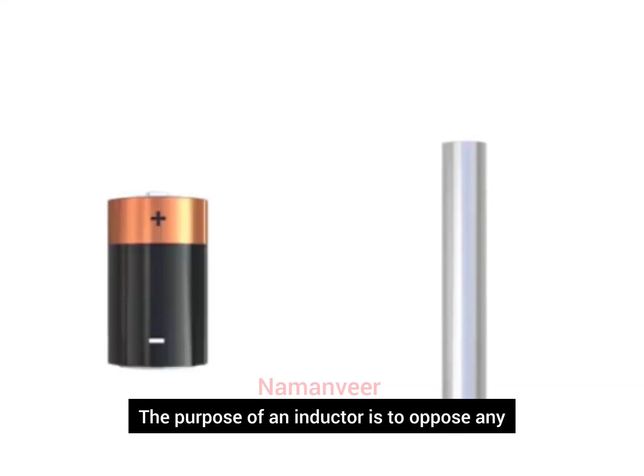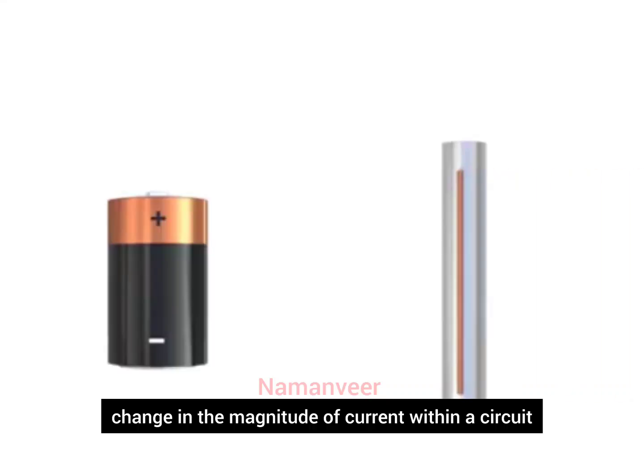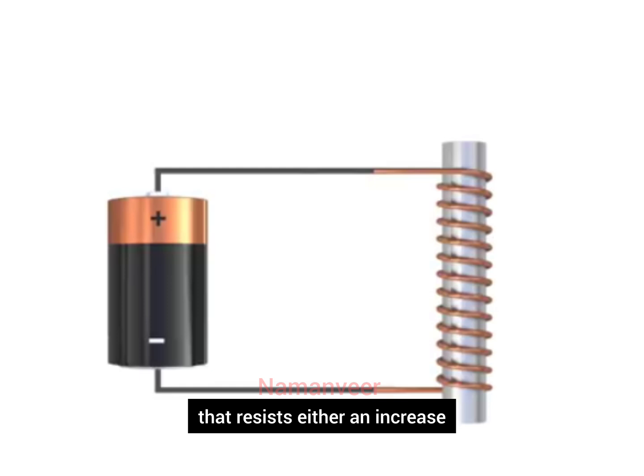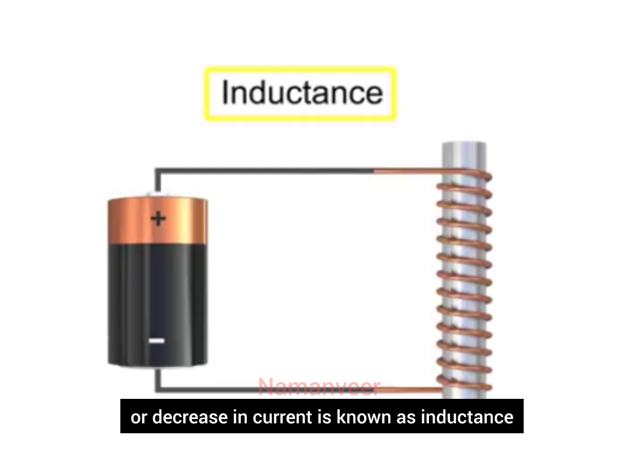The purpose of an inductor is to oppose any change in the magnitude of current within a circuit. The electrical property that resists either an increase or decrease in current is known as inductance.